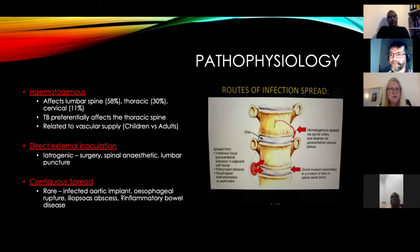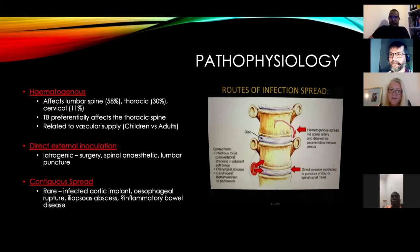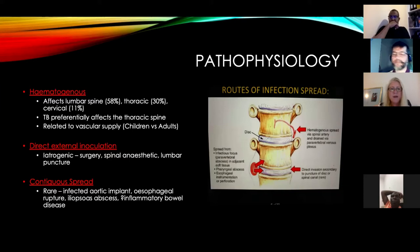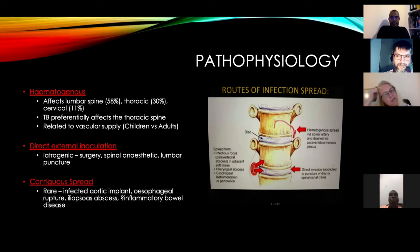Routes of infection — the main one is hematogenous, which affects the lumbar spine more than the thoracic, and more than the cervical. TB preferentially affects the thoracic spine. This is often related to the vascular supply. Direct external inoculation is typically through surgery, spinal anesthetics, or lumbar punctures. Contiguous spread is described as rare in the literature — examples include infected aortic implants, esophageal rupture, and ileopsoas abscess.